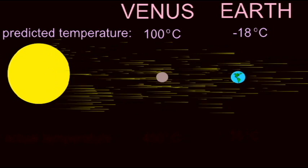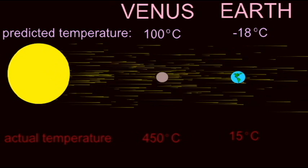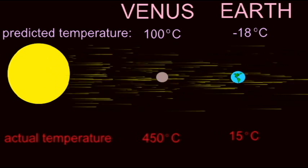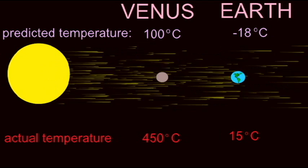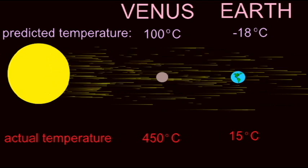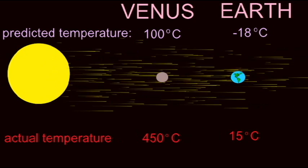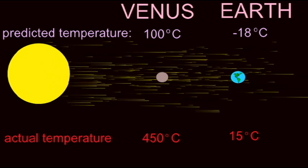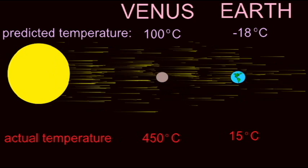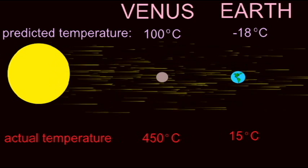Both Venus and Earth are warmer than this, however. The reason for this is that in the atmospheres of both of these planets, there exist molecules which absorb heat. Since much of the solar energy is retained around the planet instead of radiating into space, the planets are warmer than they would otherwise be.